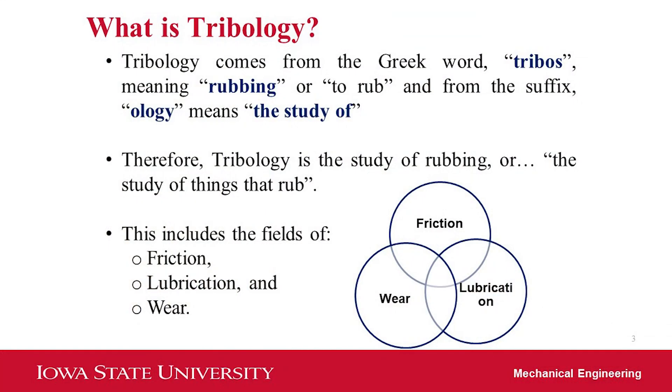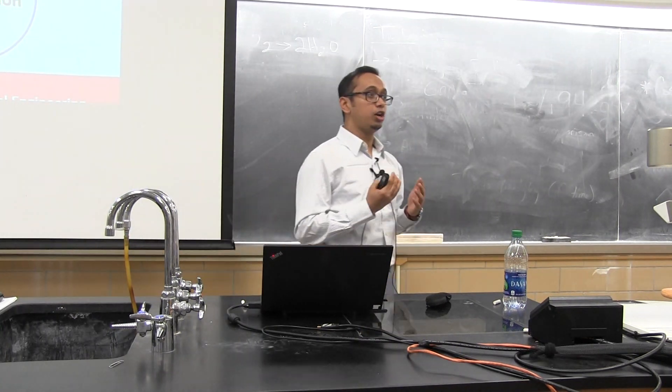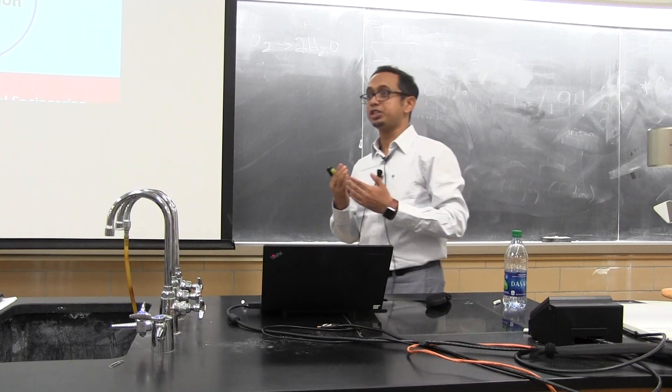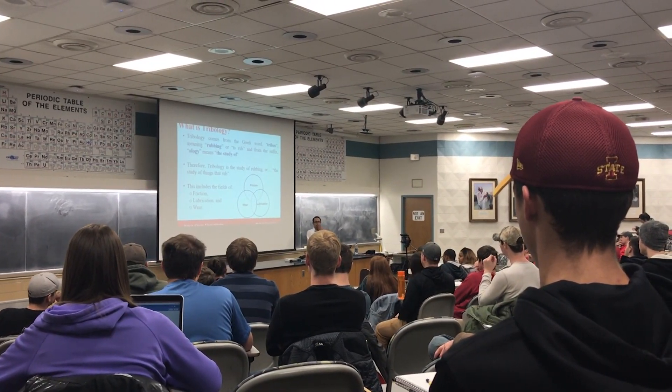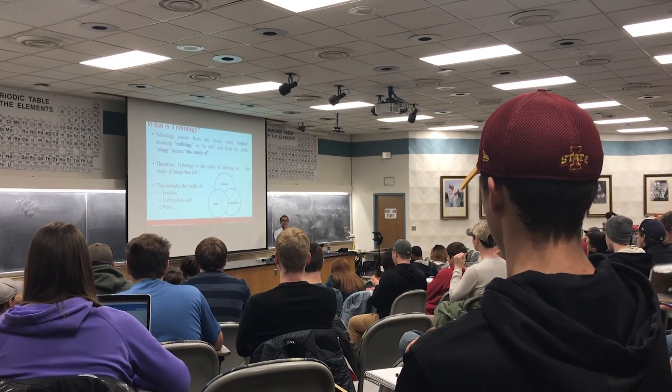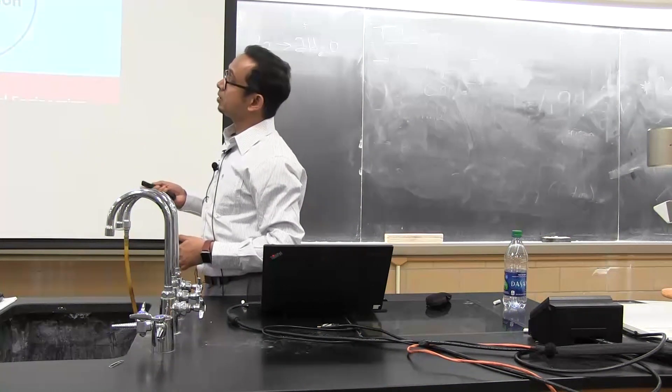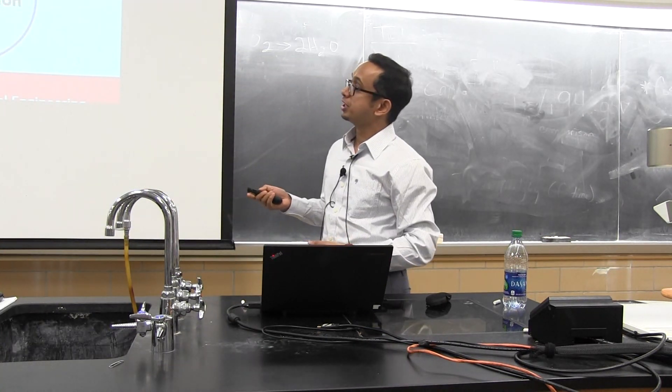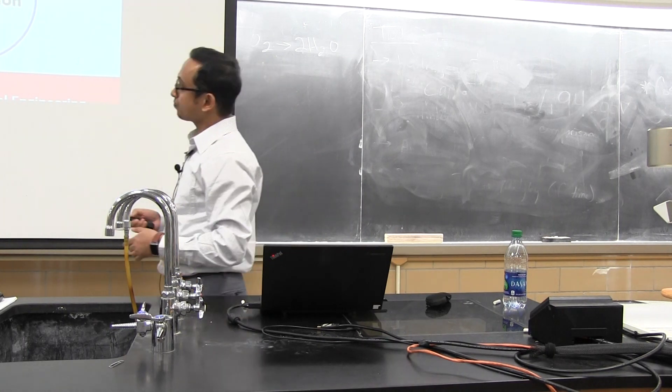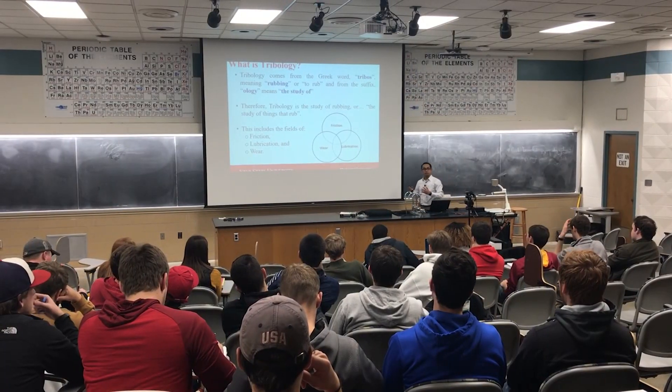So what is tribology? Tribology comes from a Greek word called tribos, which means rubbing, and logos means the study of. So tribology altogether means the study of two surfaces which are in relative motion. Suppose this is a surface and this is another surface. These two surfaces have some relative motion. What are the things going on between these two surfaces? This is the area called tribology. Tribology is basically composed of three specific fields: friction, lubrication, and wear. These three fields are connected to each other.